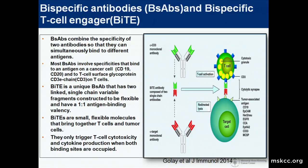Bispecific antibodies and bispecific T-cell engagers — the so-called BiTE — are an antibody that combines the specificity of two different antibodies simultaneously. In this instance, we're bringing a B-cell and a T-cell into close apposition, and that physical contact allows for engagement of the immune system without co-stimulatory molecules. Most bispecific antibodies have bound to CD19 or CD20 and then CD3 on a T-cell surface, although there are plug-and-play technologies available that allow us to mix and match with different effector cells.